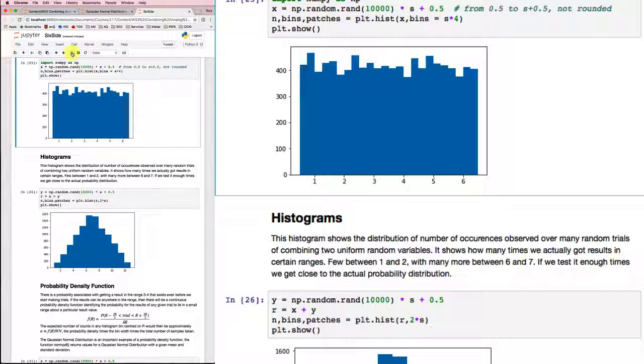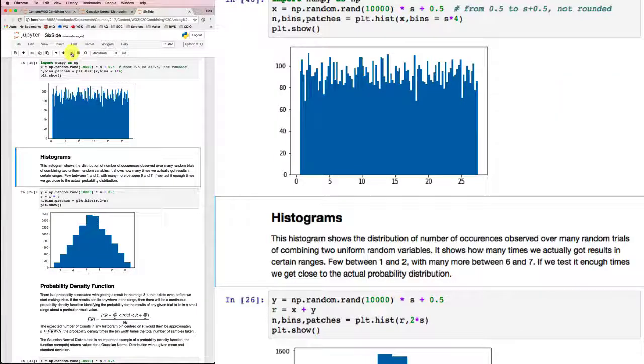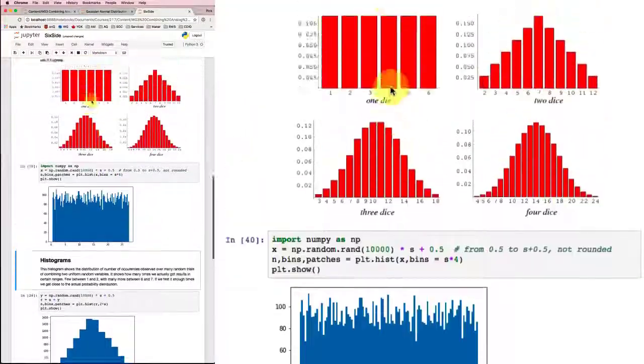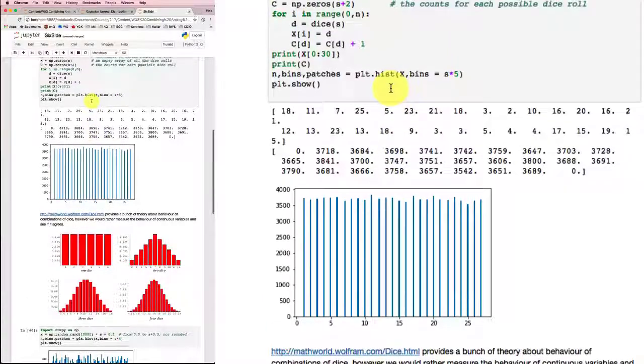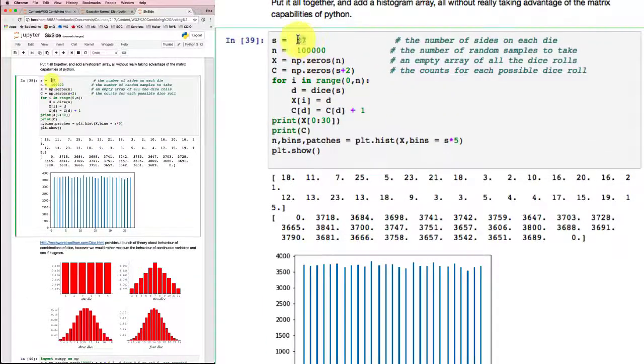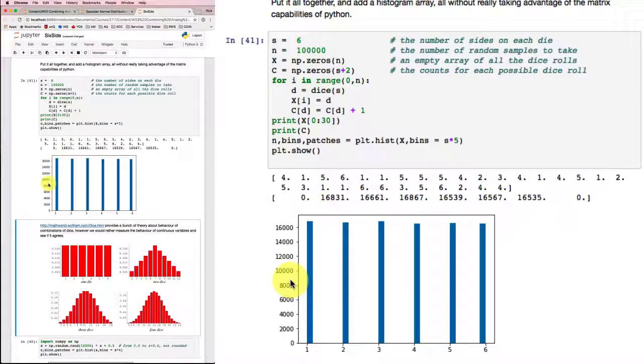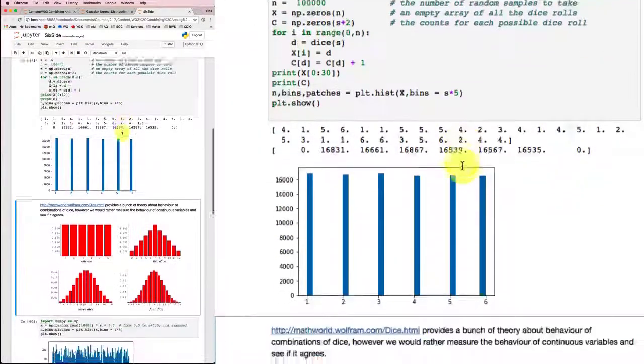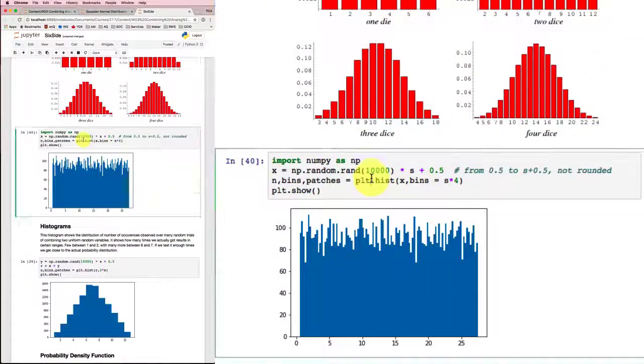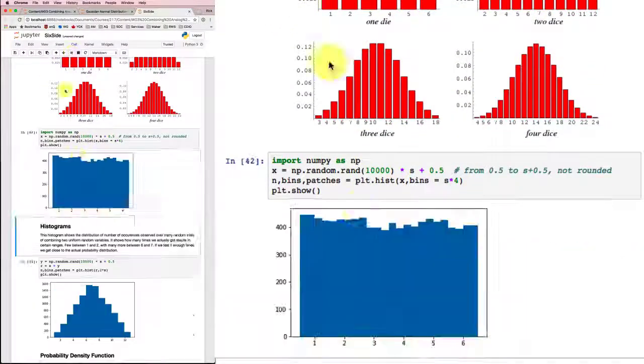Now, if I run that, I'm getting a whole lot of different bins because I still had s equal to 27 up here. Remember I said s equal to 27? Let's go back to 6 and see if we can generate the same results as the Wolfram result. So there's the relatively uniform distribution there.